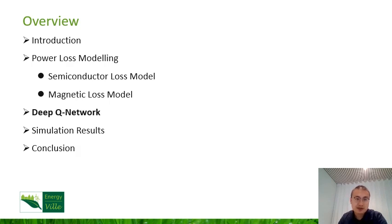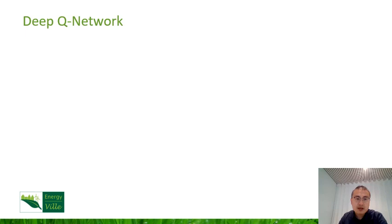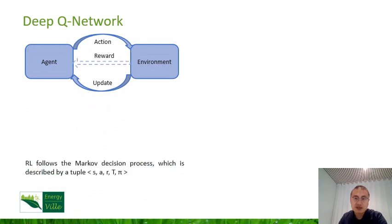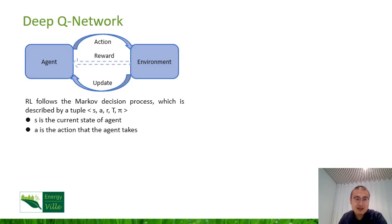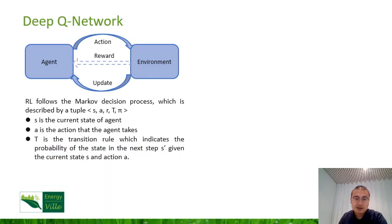In the next part, I will talk about the Deep Q Network. The basic idea of reinforcement learning follows the Markov decision process, which is described by a tuple S, A, R, T, and Pi. S is the current state of the agent, which is a vector, and the dimensions of it depend on the system. A stands for the action that the agent takes, so the state is updated based on this action. And T is a transition function, which indicates the probabilities of the state in the next step, by giving the current state S and action A.